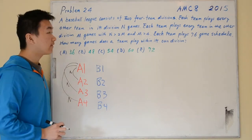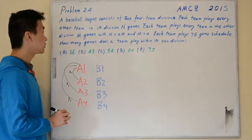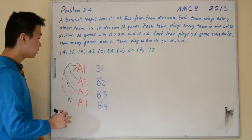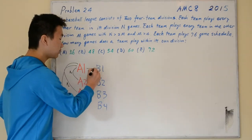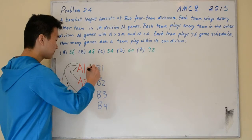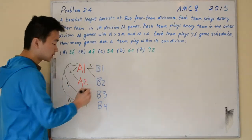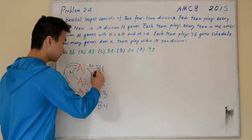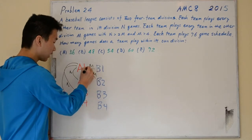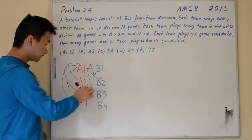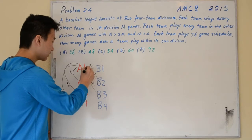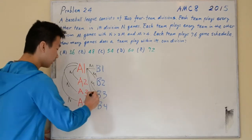Each team plays every team in the other division m games. So A1 will play against B1 m games, A1 will play against B2 m games, A1 will play against B3 m games, and against B4 m games.